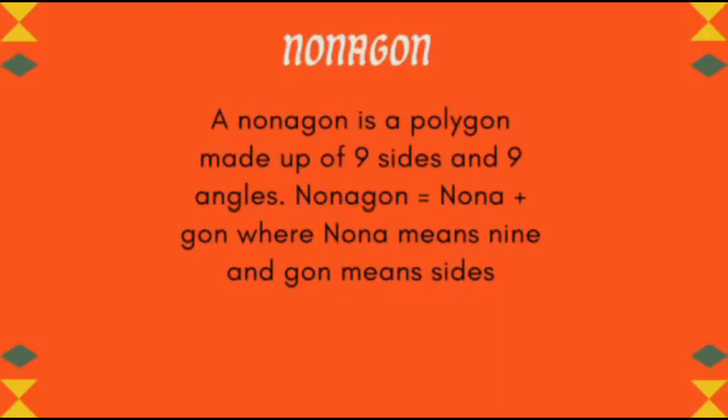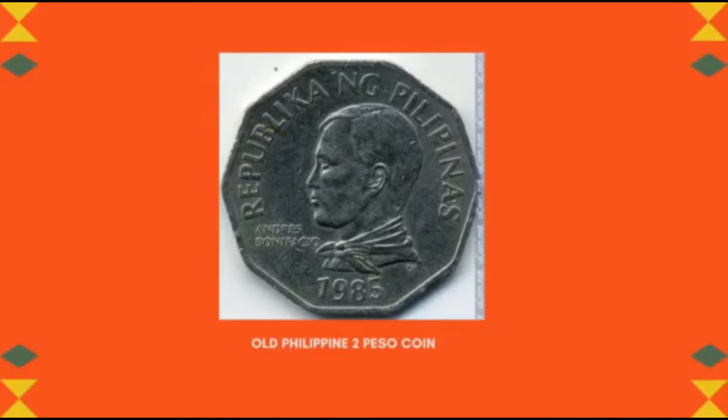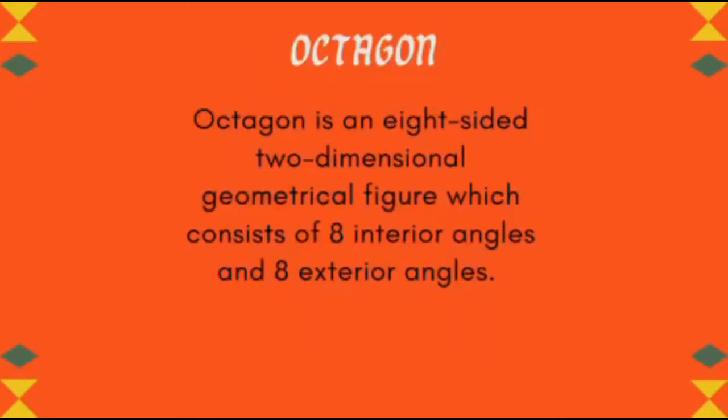Nonagon: a nonagon is a polygon that is made up of nine sides and nine angles. Nonagon — nono plus gon — where nono means nine and gon means sides.